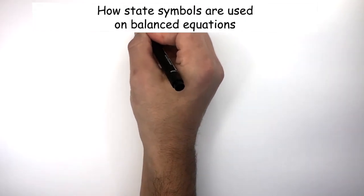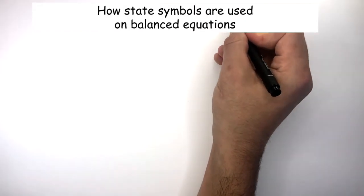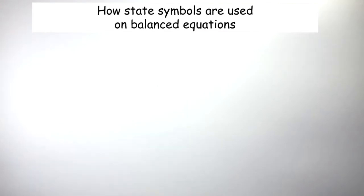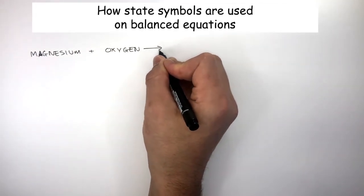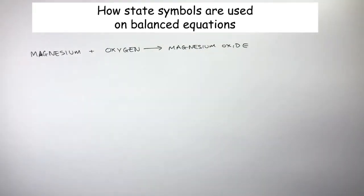We're now going to learn how state symbols are used on balanced equations. Magnesium reacts with oxygen to form magnesium oxide. Magnesium is a metal, so is a solid at room temperature. Oxygen is a gas at room temperature. And magnesium oxide is an ionic compound and is a solid.